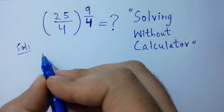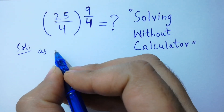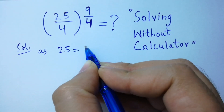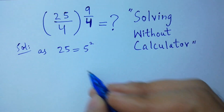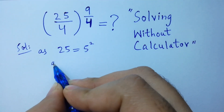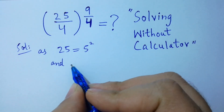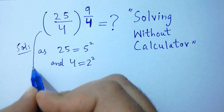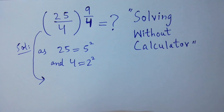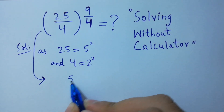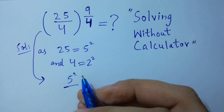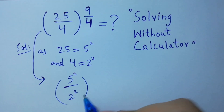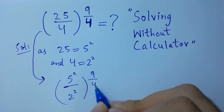As we know, 25 equals 5 squared and 4 equals 2 squared. So it will be (5² / 2²) to the whole power 9/4.